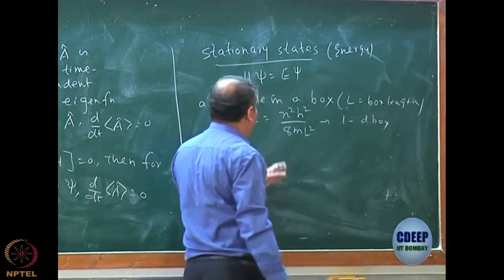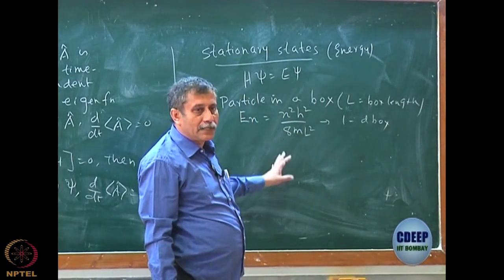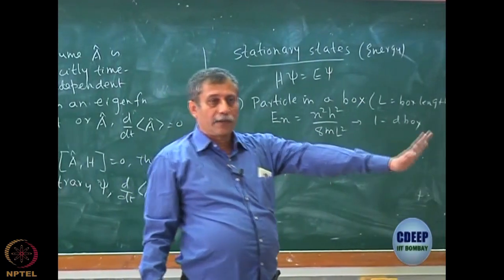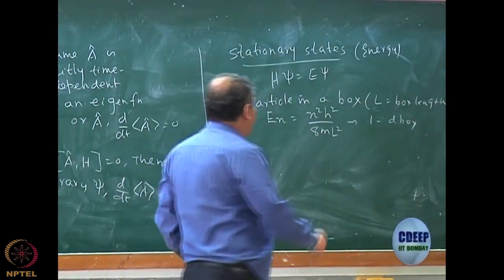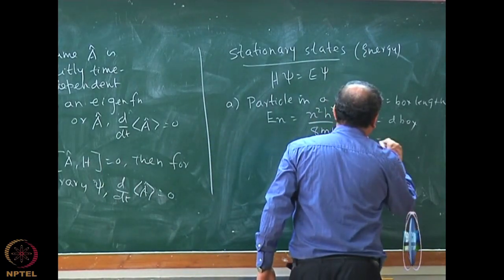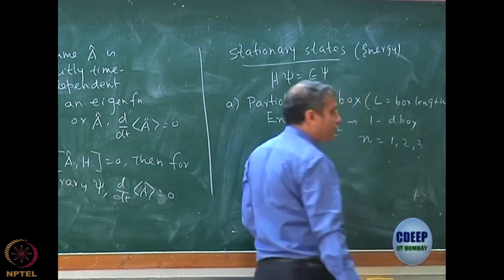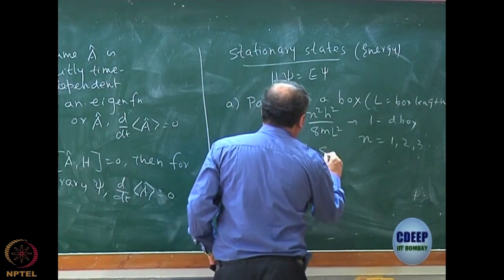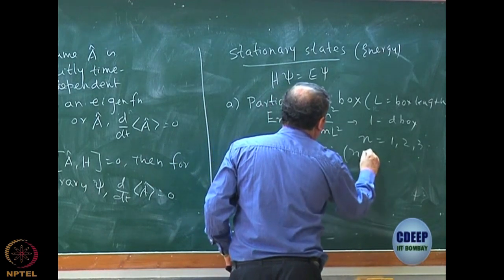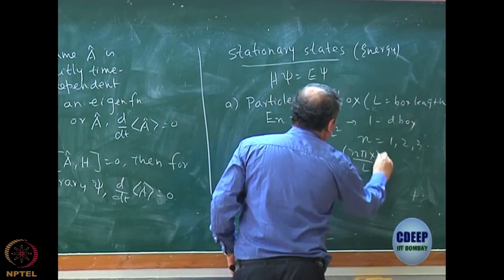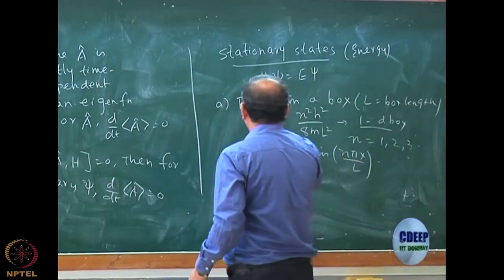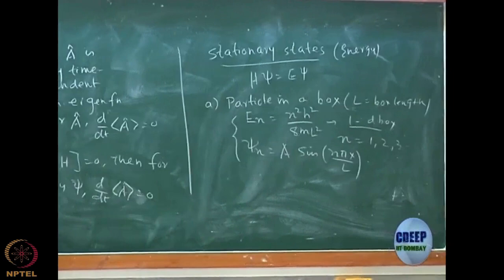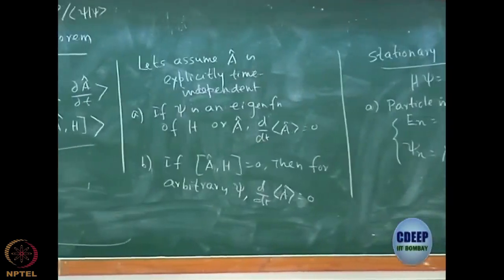If you have a 2D and 3D box, you will have more and more quantum numbers and the energy will be a sum of the X, Y, and Z contributions. N starts from 1, 2, 3, etc. The wave function for the 1D box is some constant times sin(N pi x / L). For 2D and 3D box, you can write it trivially by invoking the non-interacting theorem — if the Hamiltonian is a sum of operators, the wave function is a product.